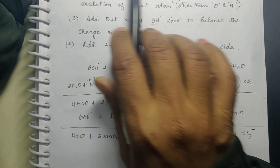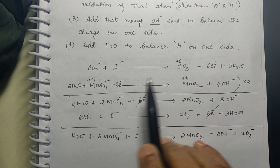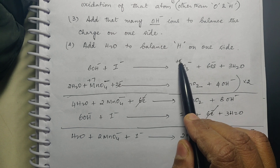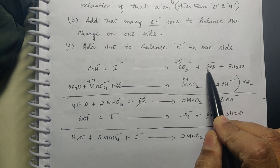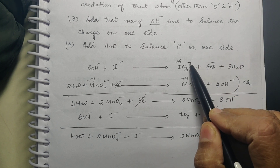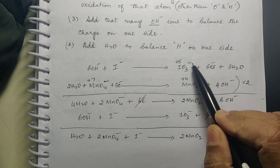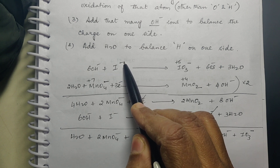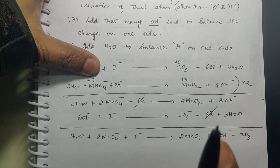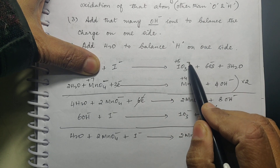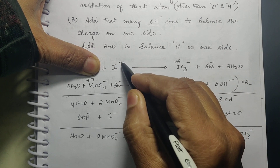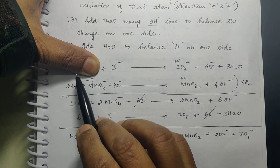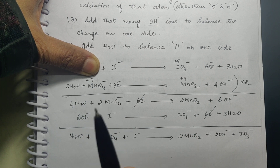Now, for the individual reaction I⁻ to IO₃⁻: here iodine is going from -1 to +5, so the first step is the same — you add 6 electrons. Now on this side there is one negative charge and there are 6 negative charges, so 6 plus 1 gives 7. Count the number of negative charges on both sides: here minus 7 and here minus 1, so you need 6 more negative charges on this side.